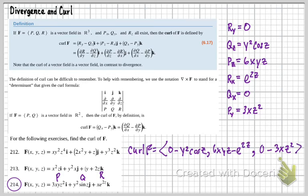And then the last one is going to be 0 minus 3xz squared. I have to clean it up as much as I can if I'm going to get full credit. So this is going to be minus y squared cos z, comma, 6xyz minus e to the 2z, comma, negative 3xz squared. So there's my answer for the curl of f.